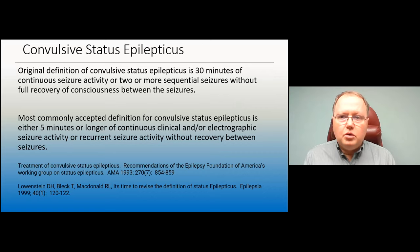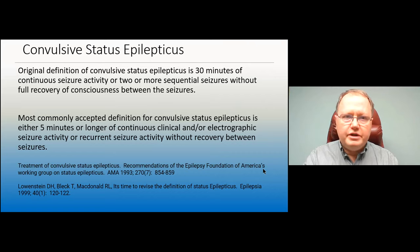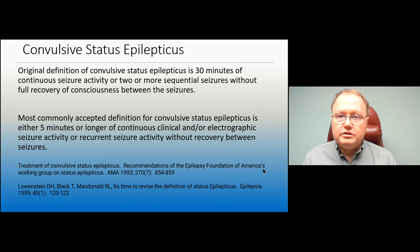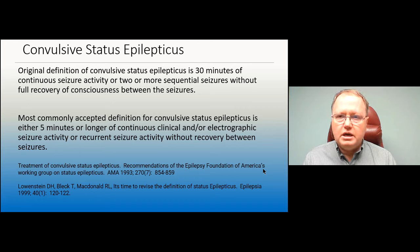When a seizure goes too long, it's called status epilepticus. The original definition was 30 minutes of continuous seizure activity, or two or more sequential seizures without a full recovery of consciousness between them lasting 30 minutes. That came from data showing that if a seizure goes on for more than 30 minutes, animal models showed neuronal breakdown. Our goal is to get everybody stopped within 30 minutes.